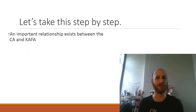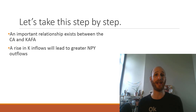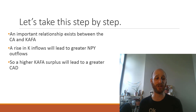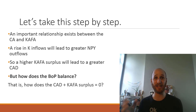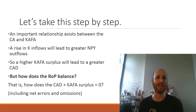We know an important relationship exists between the current account and the capital and financial account — that is, capital inflows will lead to greater net primary income outflows. So a higher capital and financial account surplus will lead to a greater current account deficit. But how does this balance? How does the current account deficit plus the capital and financial account surplus sum to zero? Why are these amounts able to sum to zero — including net errors and omissions?